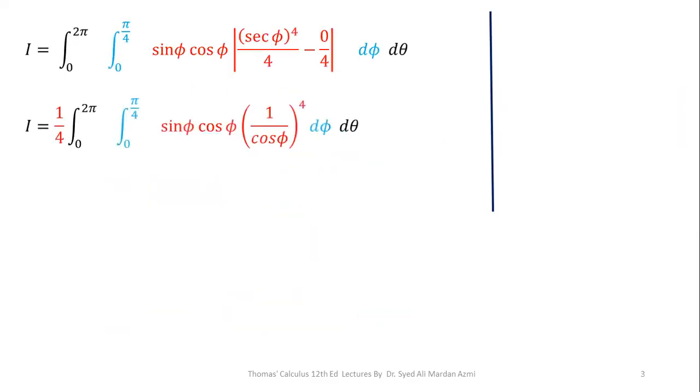Now making the simplifications, we have sin phi cos phi into 1 over cos of phi whole raised to power 4. Next, 1 cos of phi and 1 cos of phi will be cancelled out and we have 1 over cos cubed. And this 1 over cos cubed can be separated as 1 over cos into 1 over cos square.